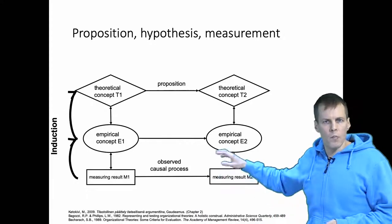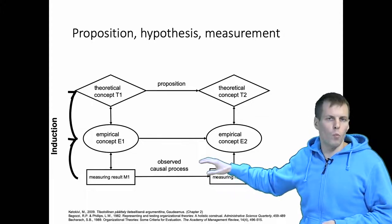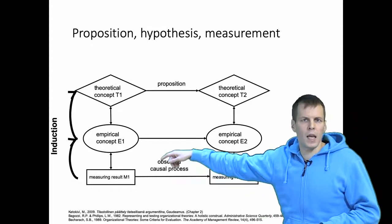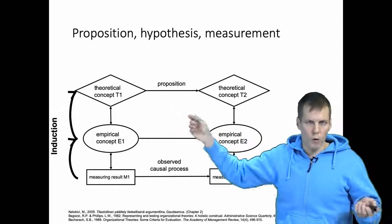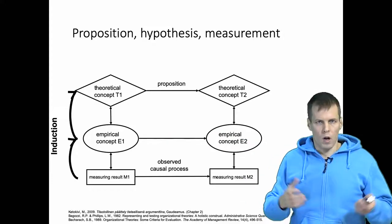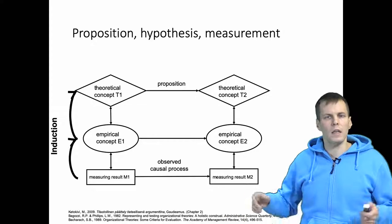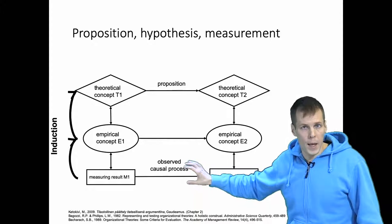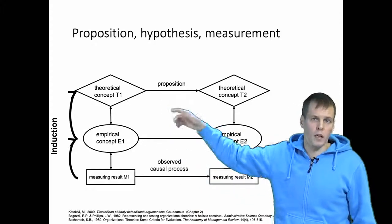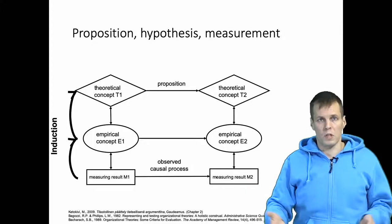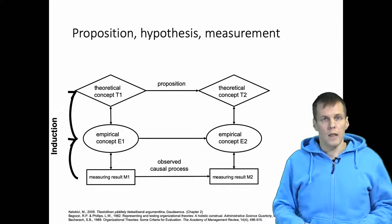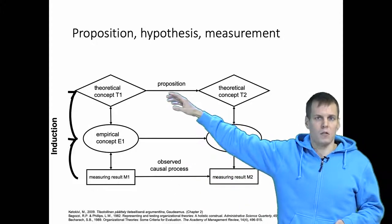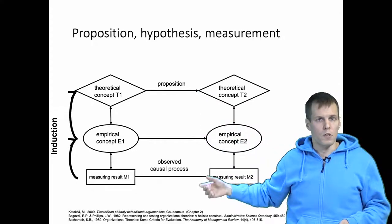Then we infer that because we observed a causal process in one particular case or one small set of cases, then maybe there is a general theory that holds for a larger number of observations or larger sample, larger population. The idea is that we observe a specific instance of a causal process and then we generalize that there could be a more general causal process that occurs also in other settings. This is the idea: you go from individual observations to more general generalizations instead of going from general theory to specific observations.